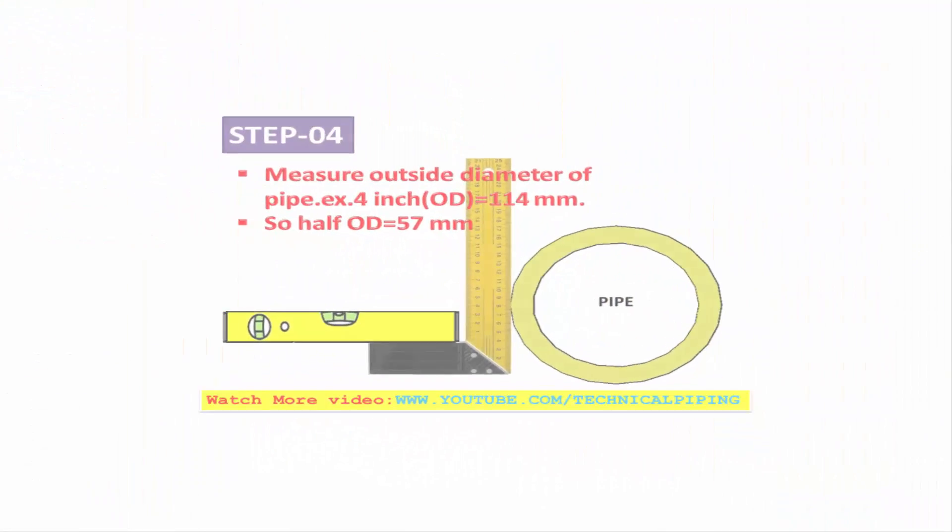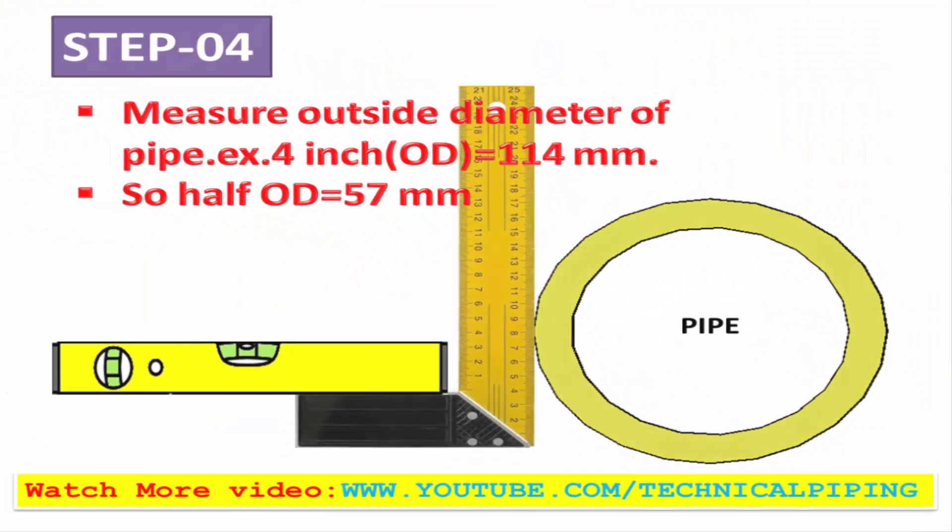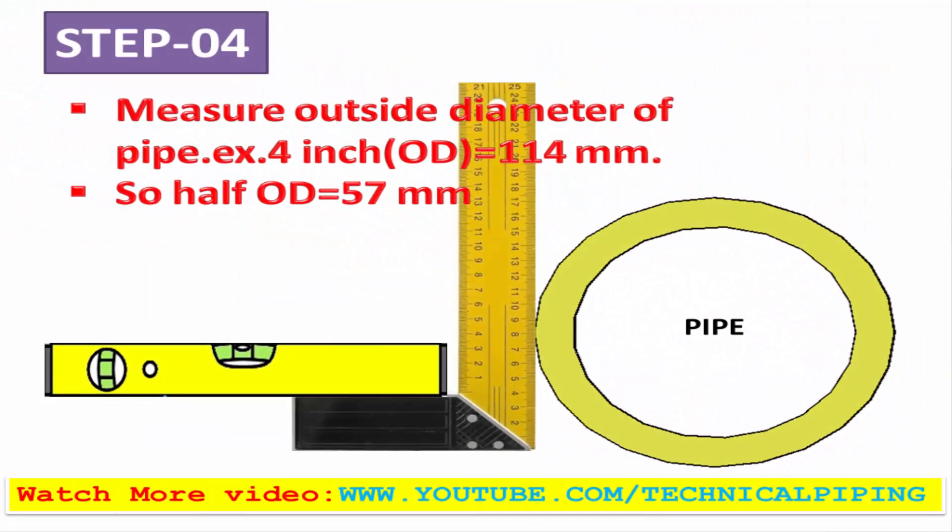Step 4: Measure the outside diameter of the pipe. For example, a 4 inch pipe has an OD of 114 mm. So half the OD of the pipe is 57 mm.